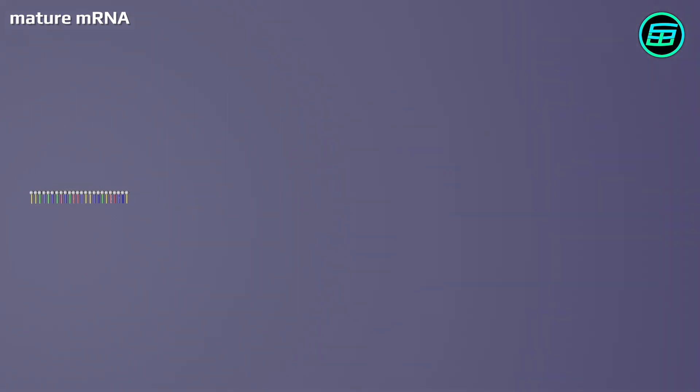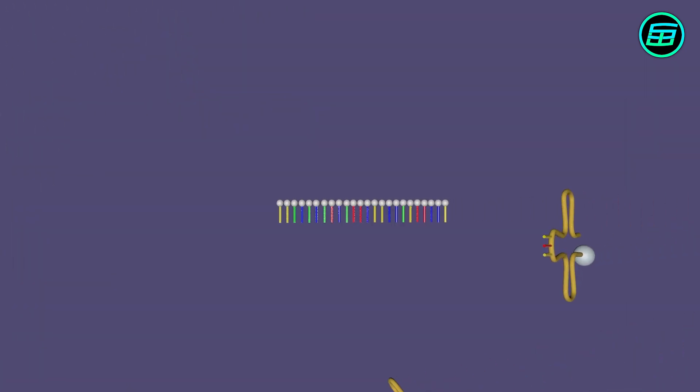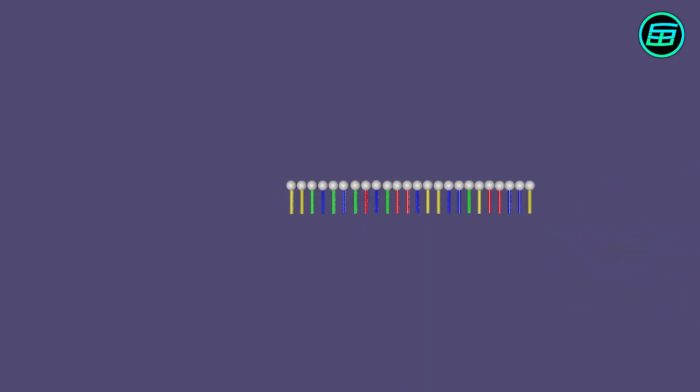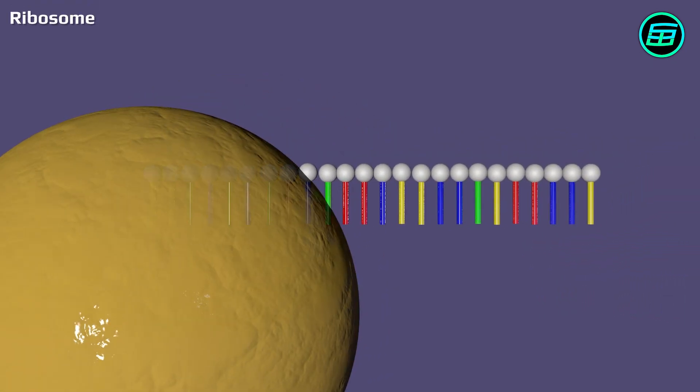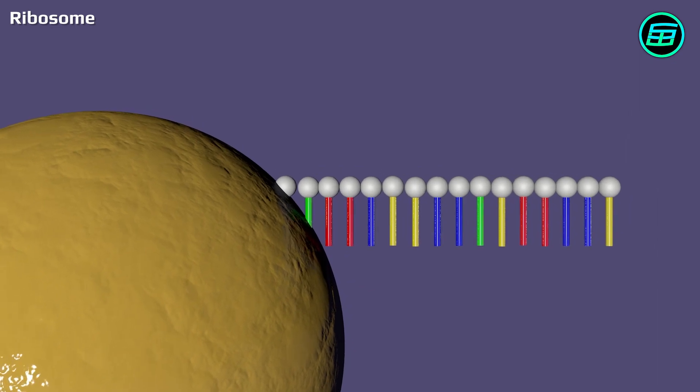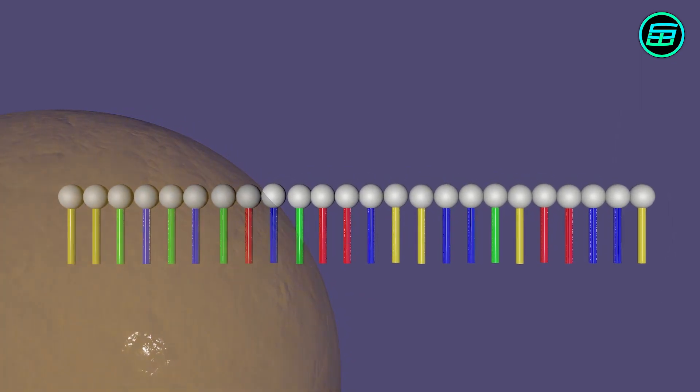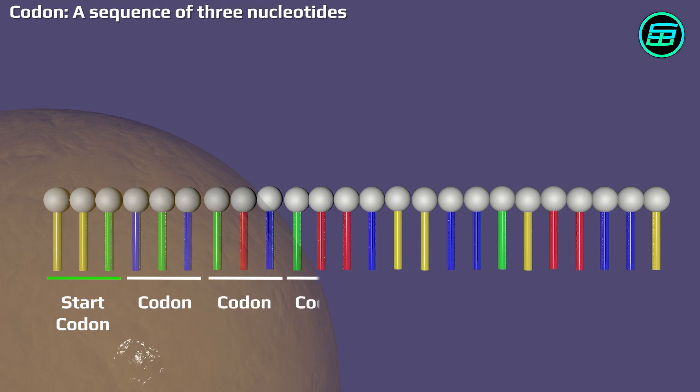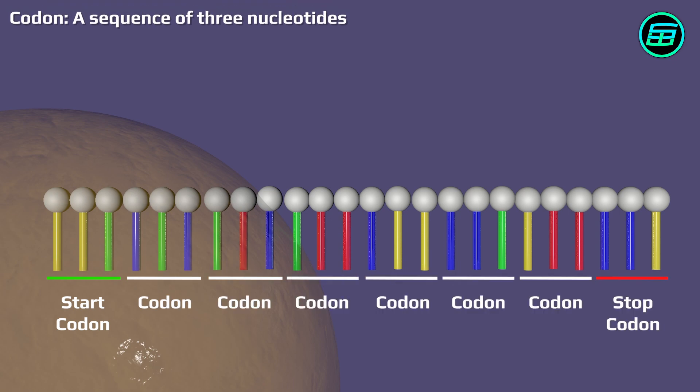Mature mRNA moves out of the nucleus into the cytoplasm and the translation phase begins. In the cytoplasm, a cell organelle called a ribosome binds to the mature mRNA. The mRNA nucleotide sequence is read in triplets called codons. The ribosome binds to the mature mRNA at the start codon.